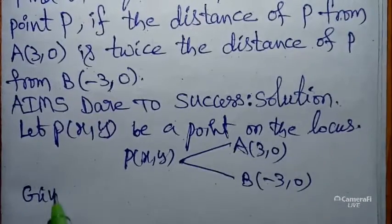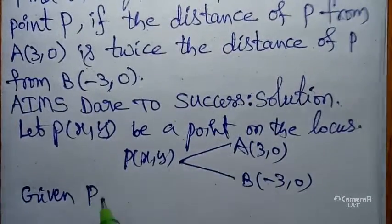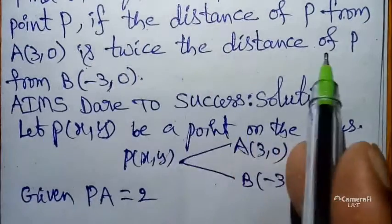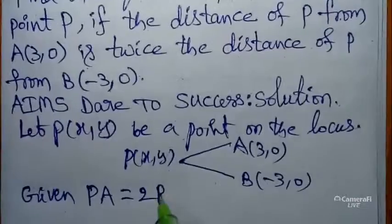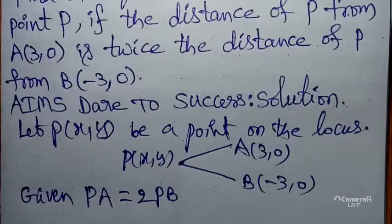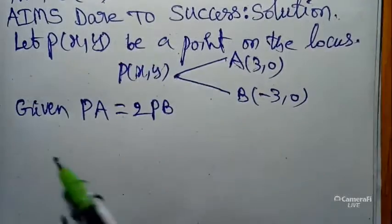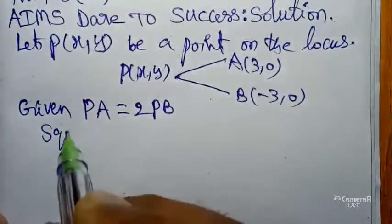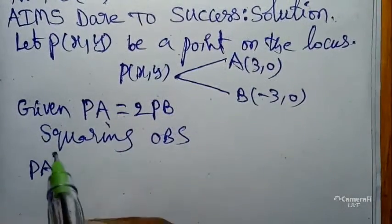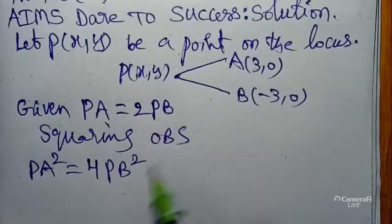I want to write the given condition: the distance of P from A, that is PA, equals twice the distance of P from B, that is PB. So the given condition is PA = 2·PB. Now squaring on both sides, we get PA² = 4·PB².